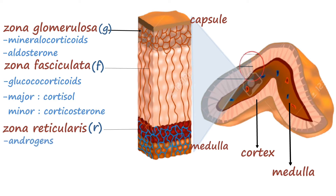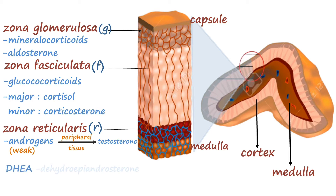The androgens secreted by the adrenal cortex are weak androgens and they have to be peripherally converted into testosterone. These weak androgens secreted by zona reticularis are DHEA — dihydroepiandrosterone — and androstenedione.